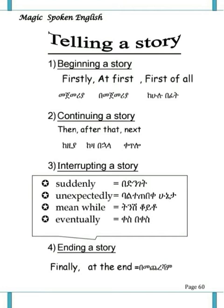Now let's review the story connectors. For beginning: 'firstly,' 'at first,' 'first of all.' For continuing: 'then,' 'after that,' 'next,' 'later.' Additional connectors include: 'suddenly,' 'unexpectedly,' 'meanwhile,' 'eventually.' And for ending: 'finally,' 'at the end.'